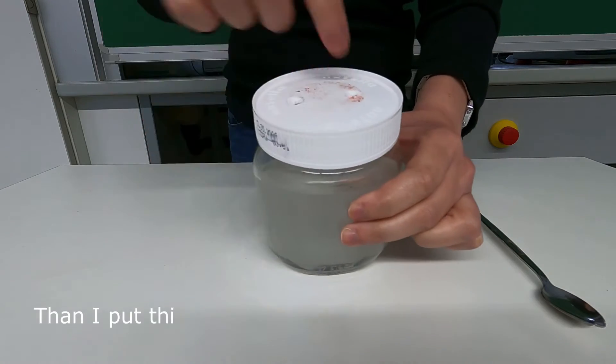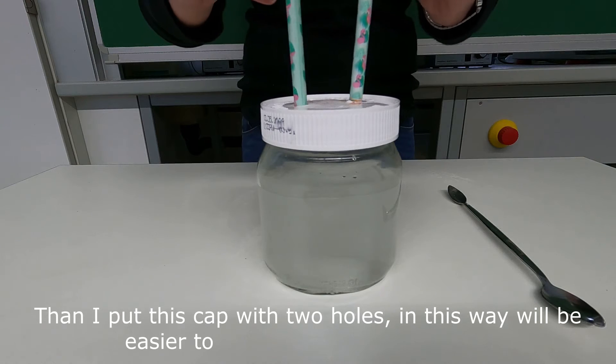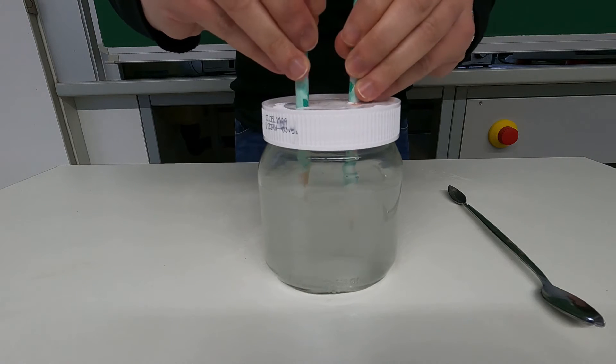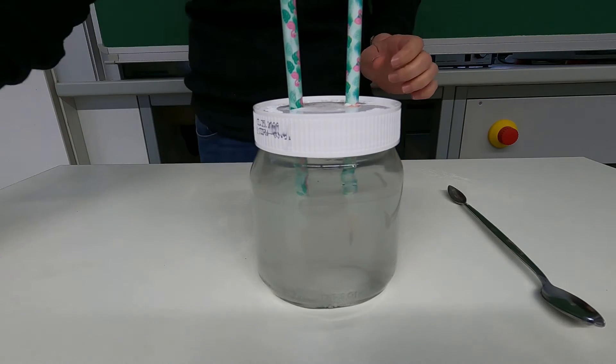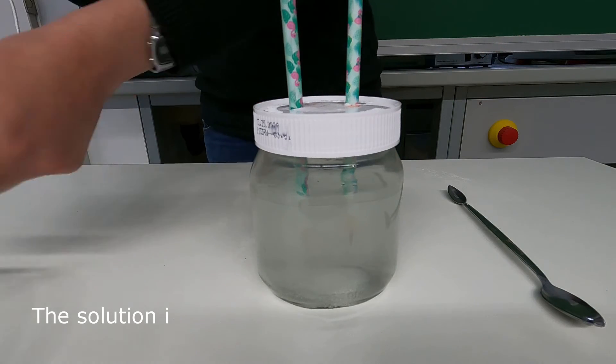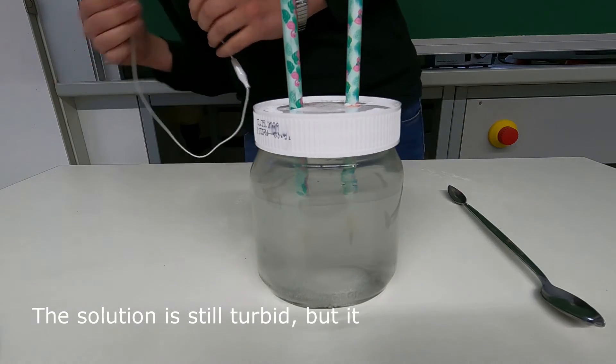Then I put this cap with two holes. In this way it will be easier for the two pencils to get inside. The solution is still turbid but it will get cleaner soon.